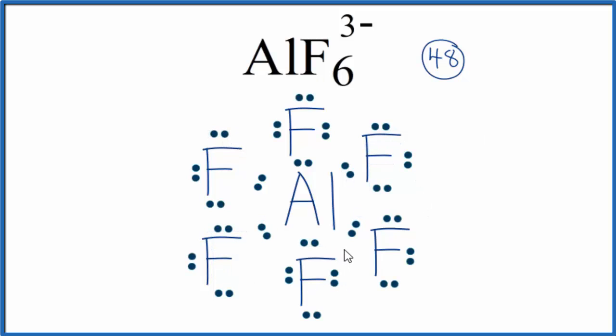So we've used all 48 of our valence electrons. Let's replace the electron pairs that form the chemical bonds between the aluminum and the fluorine with single bonds. That'll be a lot clearer.